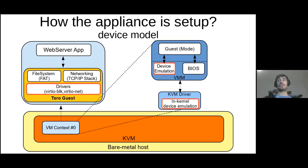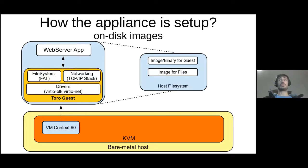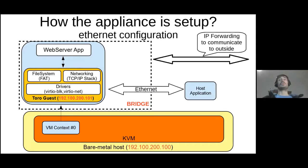In terms of device model, we need to set up the devices the appliance will use. In this case, the device model must include a VirtIO network card and a VirtIO block device. To deploy the appliance, two files are needed: first, the binary containing the code, which is an ELF 64 binary — generally about 250 kilobytes — and the files that the appliance hosts, which could be in the order of megabytes. Finally, to provide networking for the VM, we need to set up the IP of the VM and the IP of the host, and to expose the VM to the internet, we have to set up some sort of IP forwarding.